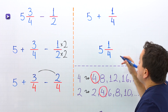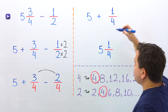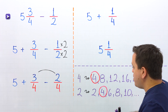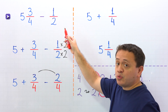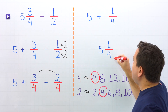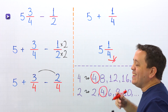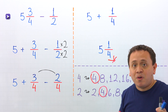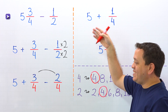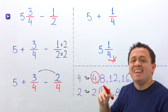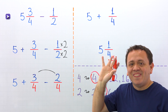Therefore, 5 and 3 fourths minus 1 half gives us 5 and 1 fourth. That's all for today. If you want to learn more about this topic, check out this playlist. And here you have another video. Have a good one and see you in the next lesson. Bye!